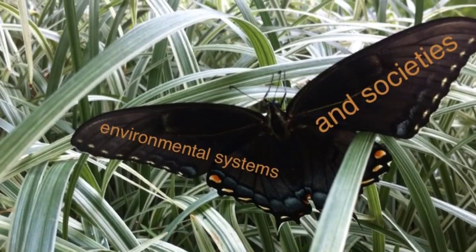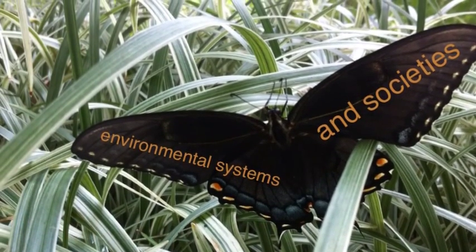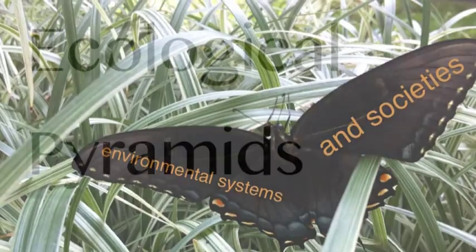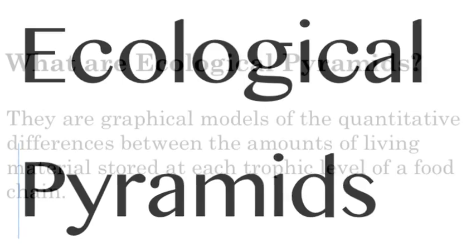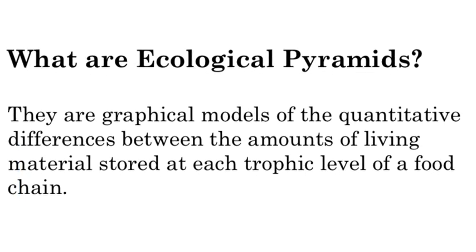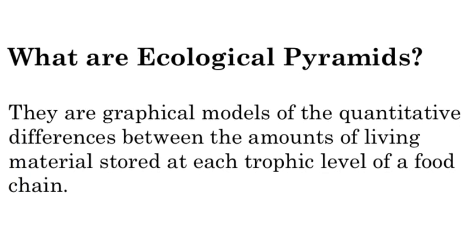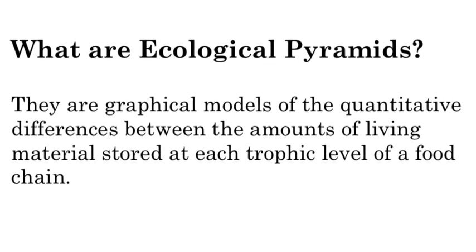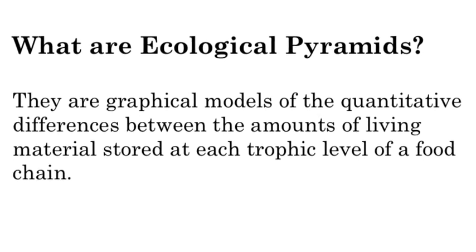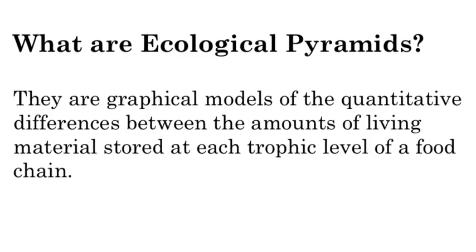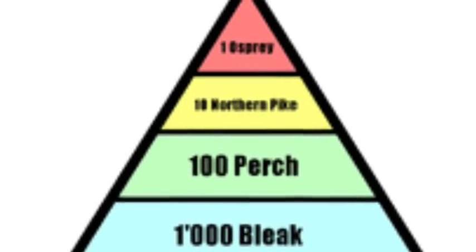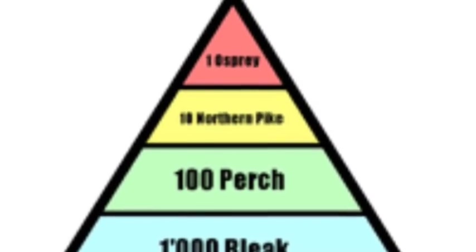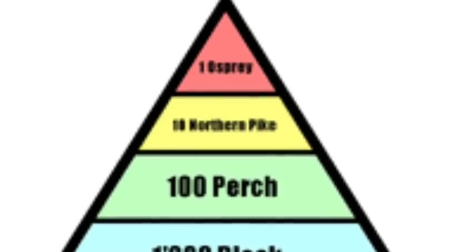Hello nature lovers and welcome to another exciting video in the environmental systems and society series. Today's is all about ecological pyramids — what they are and how they help us. They're simply models that show us the different amount of stuff in an area, the number of organisms in an area, or the energy in an area, organized in an easy-to-read format.